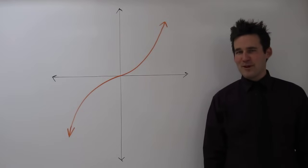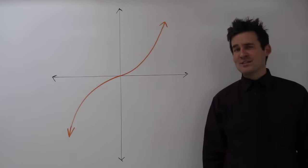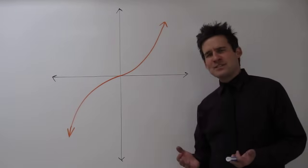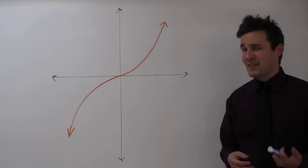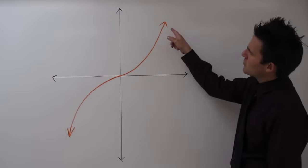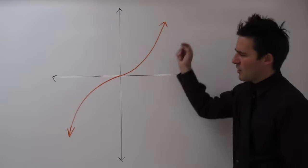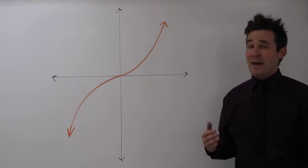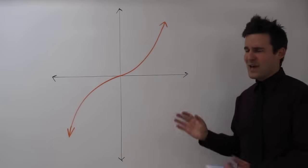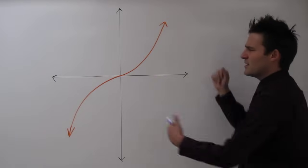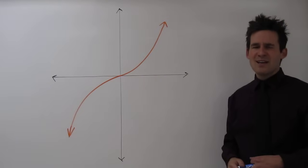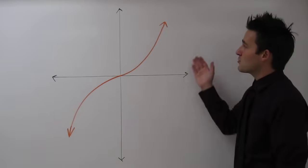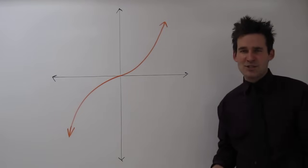Hi, I'm Kevin Roberg, and today we're going to talk about end behavior. Ever since you were a young mathematician graphing things, you drew little arrows at the end of functions to describe that they continue going on beyond the little picture you just provided. Today we're going to talk about a precise way of describing what's actually happening.